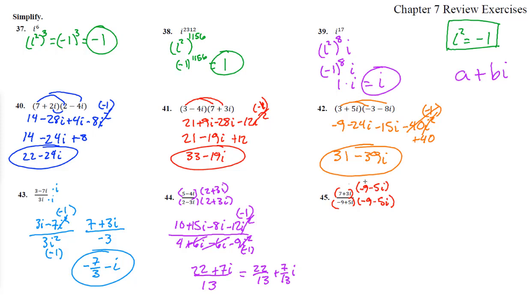On the top, 7 times negative 9 is negative 63. 7 times negative 5 is negative 35i. 3i, that's negative 27i. That times that is negative 15i squared. Then on the bottom, we have negative 9 times negative 9 is positive 81 plus 45i minus 45i minus 25i squared.